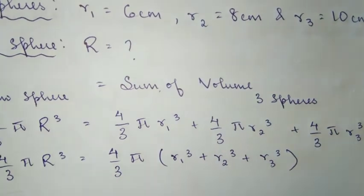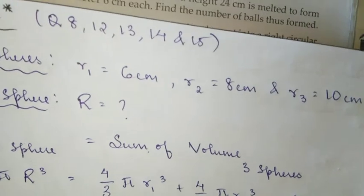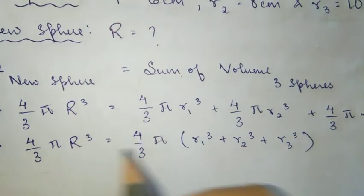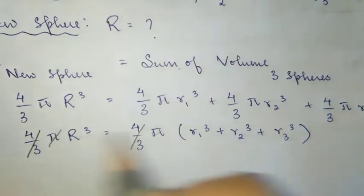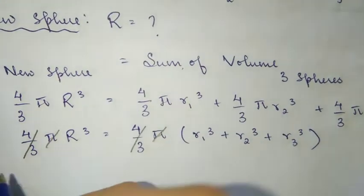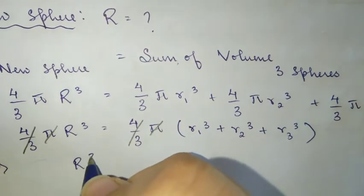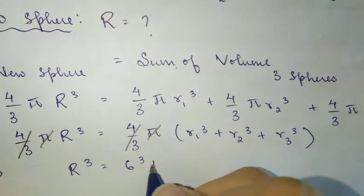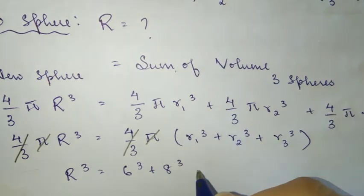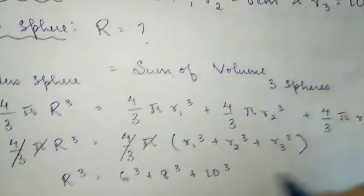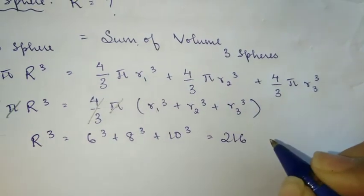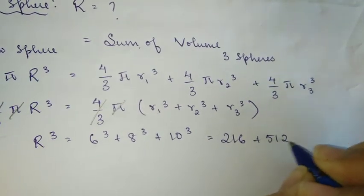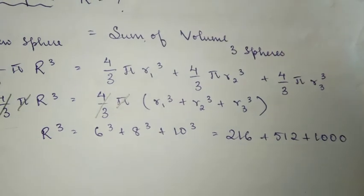Now let's substitute the values of r one, r two, and r three. Before we do that, we will cancel four by three and pi on both sides. So r cube equals r one is 6 cube plus r two is 8 cube plus r three is 10 cube. We know 6 cube is 216, we know 8 cube is 512, and we know 10 cube is 1000.